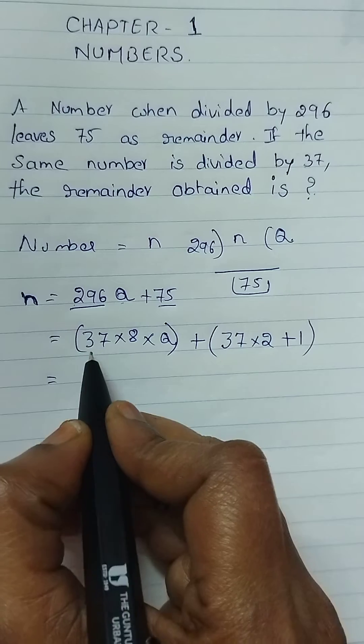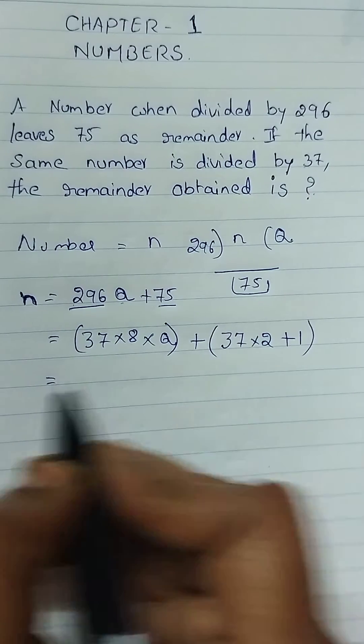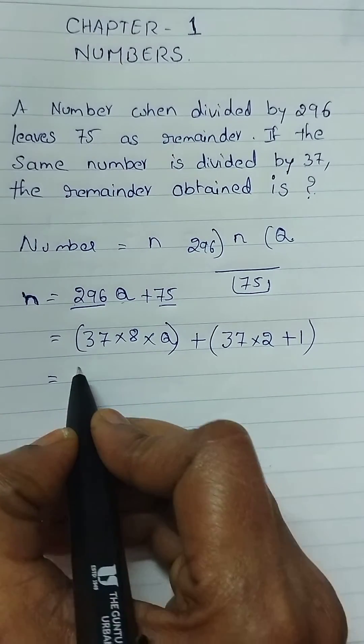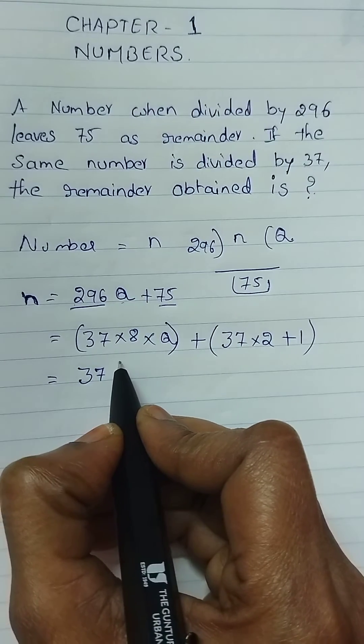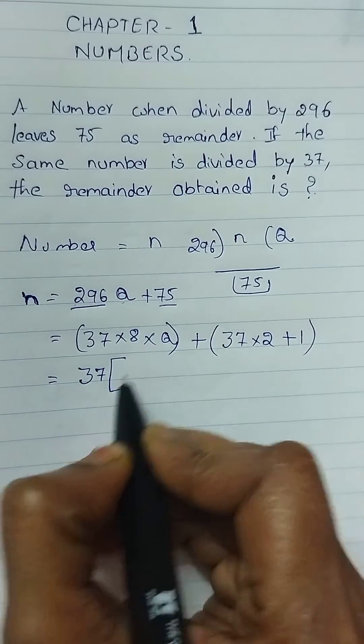Plus here also 75 should be written in terms of 37. 75 can be written as 37 into 2 plus 1. Okay, here take the 37 as common in both.